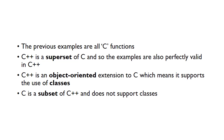The previous examples we saw were all C functions. Since C++ is a superset of C, all these examples are also perfectly valid in C++. If you compiled the code using G++ rather than GCC it would still compile because it's perfectly valid C++ code. But C++ is an object oriented extension of C, which means it also supports using classes. This doesn't work the other way — C is a subset of C++ and does not support classes.